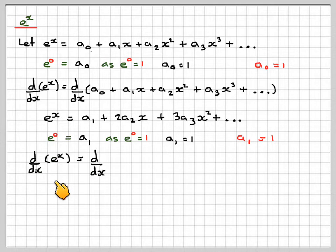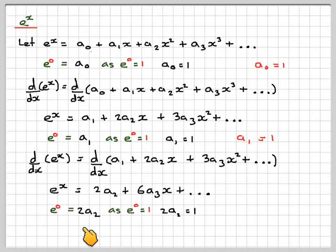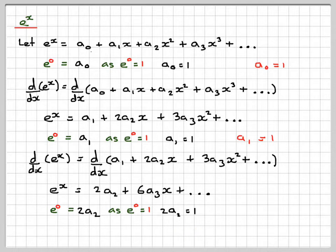If we differentiate d/dx again, of e to the x and of the right side, we get e to the x on the left and 2a2 plus 6a3x on the right. Setting x equal to 0, e to the 0 equals 1, so 2a2 equals 1. Therefore, a2 is equal to 1 over 2 factorial.